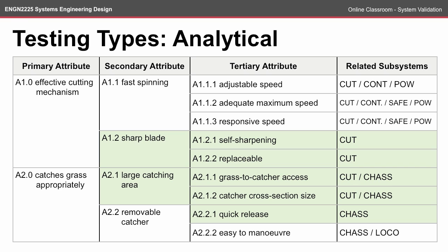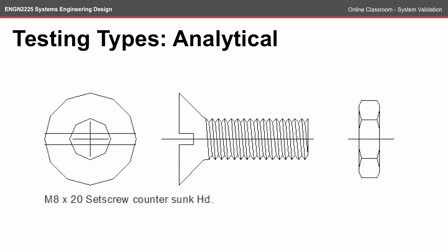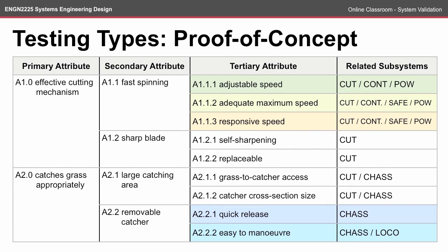Each attribute would have a separate analytical way of testing whether or not the attribute was met in the design. For example, looking at the replaceability of a system, we might have a test that looks at the design of the screw.